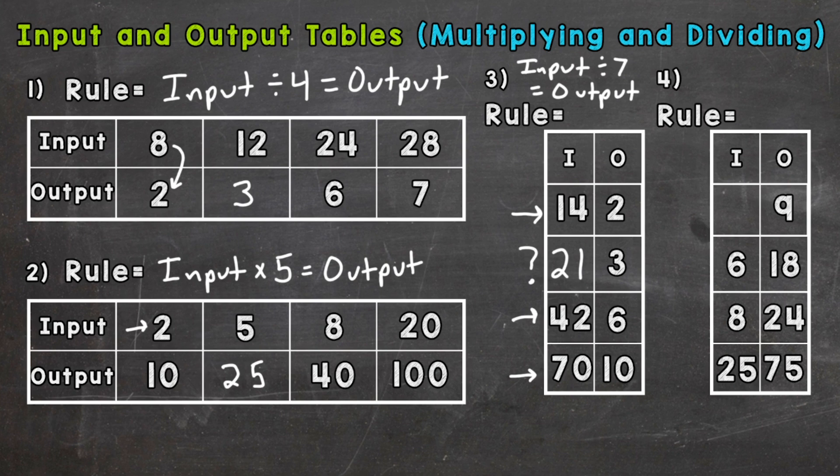And lastly, number four here. It looks like we are increasing in value. Six to equal 18, eight to equal 24, and 25 to equal 75. So each one of those inputs is being multiplied by three. Six times three is 18, eight times three is 24, 25 times three is 75. So what times three equals nine? Well, three times three equals nine. So our rule, our input numbers are being multiplied by three, and that equals our output.